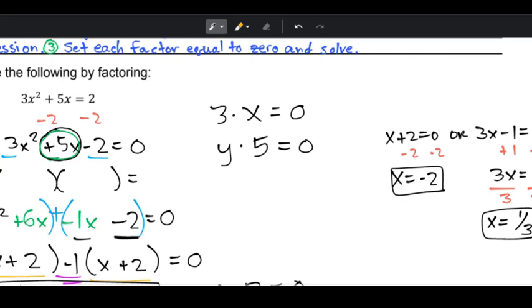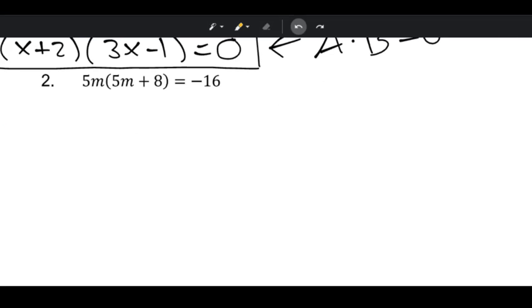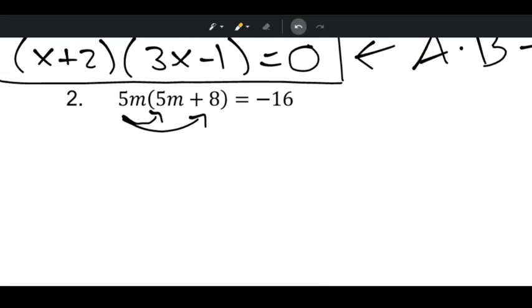So you can plug them in to check, if you're not sure if you did it right, plug them back into the original, and when you do that, you should get two. So let's try another one. Taking a look at this next one, it doesn't equal zero, so we're gonna have to move over that negative 16, but we are also going to have to distribute this 5m. So one of our first steps then would be to move that negative 16, but then we have also 25m² + 40m, and then if I add 16 to both sides, I'm going to have a +16 on the left and zero on the right. So that would be step one.